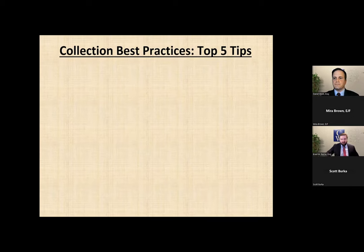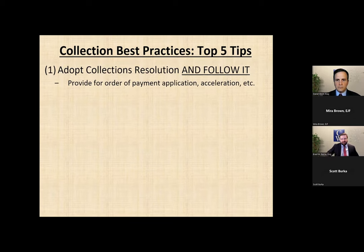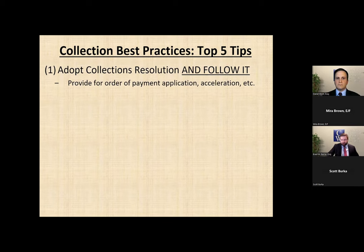We'll end with a top five list of best practices and then open it up to questions. Number one: adopt a collections resolution and follow it. I mentioned those rules and regulations at the outset — adopting a collections resolution can streamline your collections process and make certain things automatic. It can clarify when notices will go out, provide default instructions to management and your attorneys about how accounts should be handled, and essentially allow the professionals to do what's in the best interest of the association. Once you have one in place, of course you want to follow it — one of the things judges hate to see is a policy in place that was not adhered to, and that can cause them to favor a debtor in court.